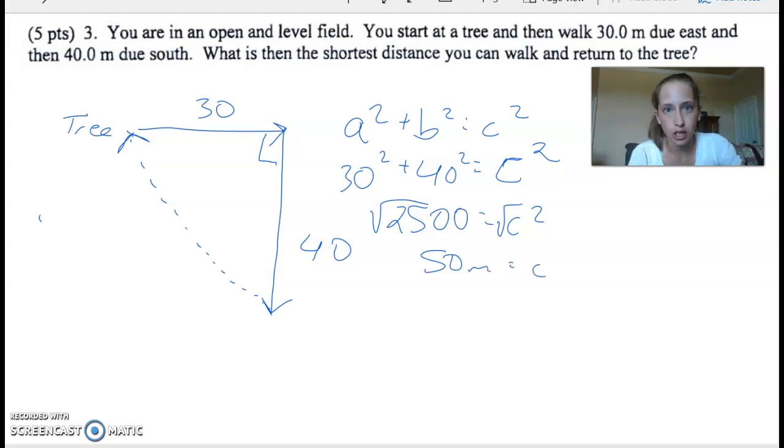Or, you can remember, if you're pinky up fancy, you can realize that this is a three, four, five right triangle. So if the two legs are three and four, or like multiples of three and four, the hypotenuse will be the same multiple of five.